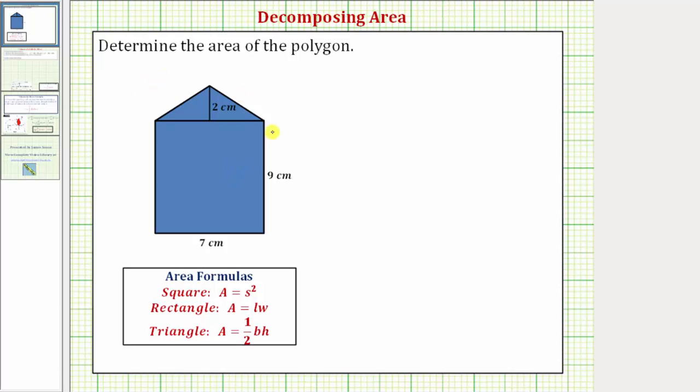We're going to determine the area of the given polygon. To find the area, we will decompose the area, which means we'll divide the polygon into two polygons.